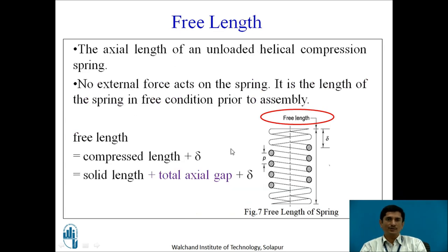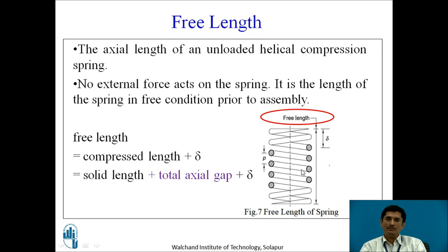The free length of the spring is the axial length in the unloaded condition — no external force acting on the spring. It is the length prior to assembly. Free length equals compressed length plus delta (total deflection), or equivalently, solid length plus total axial gap plus deflection delta.